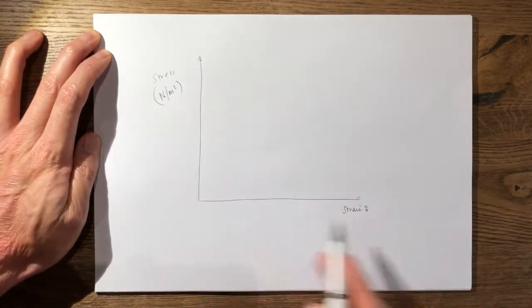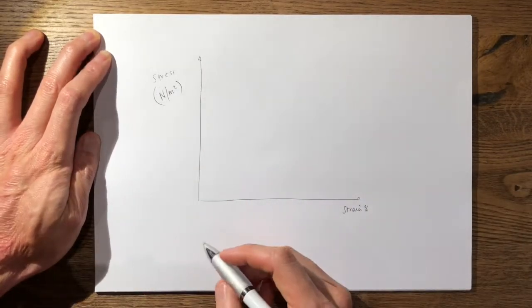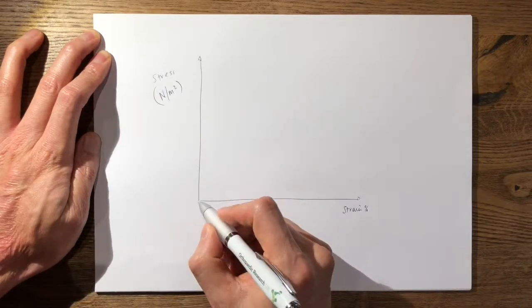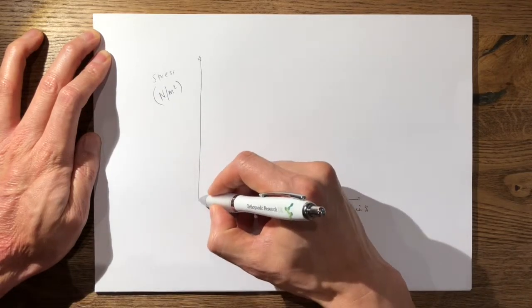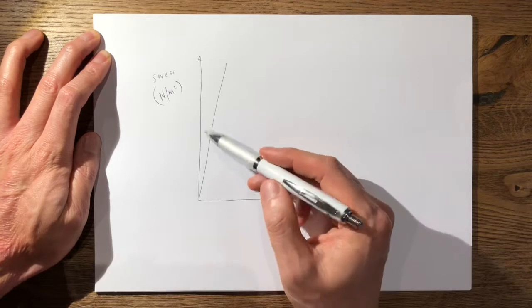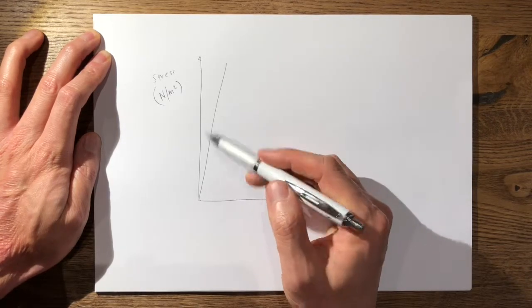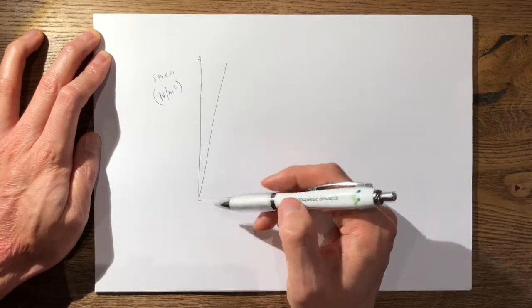Now here we have the same stress-strain axes that you'd normally draw for your stress-strain curve, and the gradient remember is the Young's modulus. The stiffer the material, the steeper the gradient.